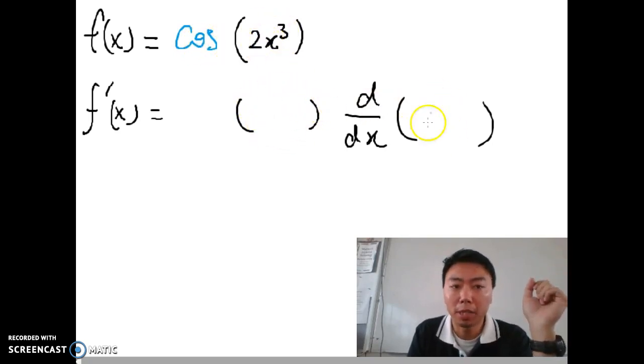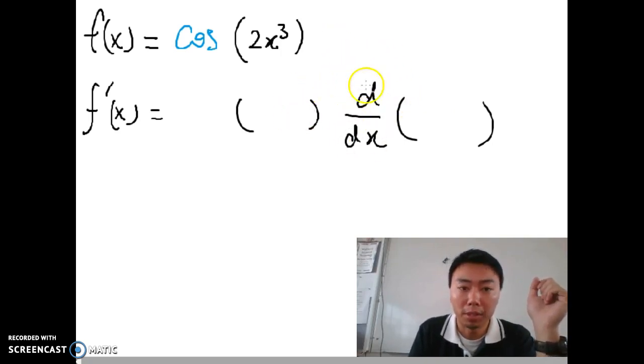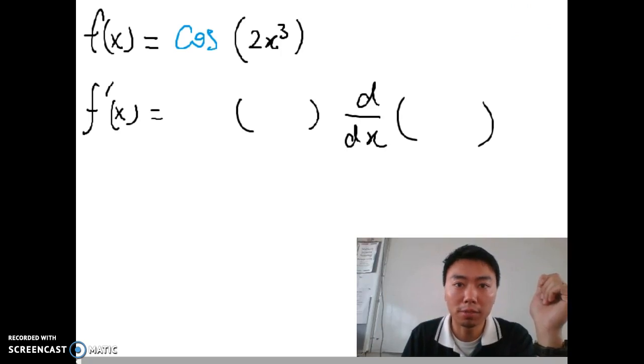So I copy the bracket twice whenever I use chain rule and then put a d in the middle. That means I remind myself I need to differentiate the inner part. So I copy the question first, I copy the bracket twice first.